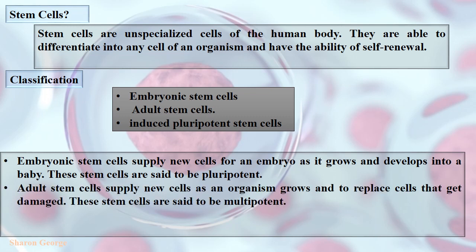Adult stem cells can supply new cells as an organism grows and to replace cells that get damaged. These cells are multipotent in nature, which means they can only change into some cells in the body, not any cell. For example, skin or epithelial stem cells provide the different types of cells that make up our skin and hair.